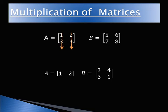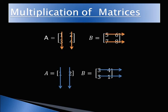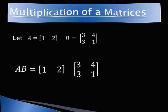In the first example, matrix A has two columns and matrix B has two rows, so A and B are confirmable for multiplication. In the second example, the same situation applies — the number of columns of A equals the number of rows of B, so they are also confirmable for multiplication.